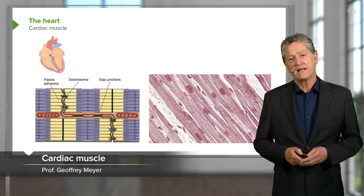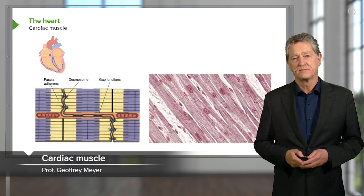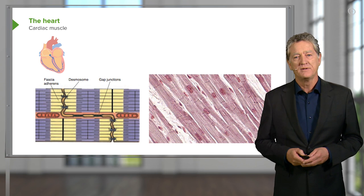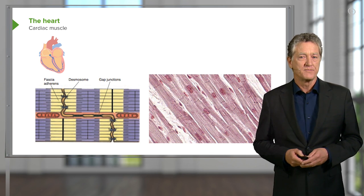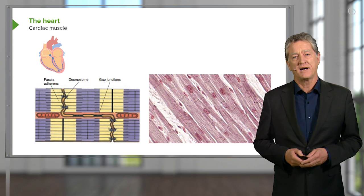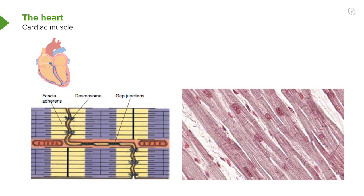Now let's move on and look at the structure of cardiac muscle. Cardiac muscle is a specialised piece of tissue, so important to the function of the heart. You need to be aware of its differences from skeletal muscle and smooth muscle. Cardiac muscle does have some characteristic features.